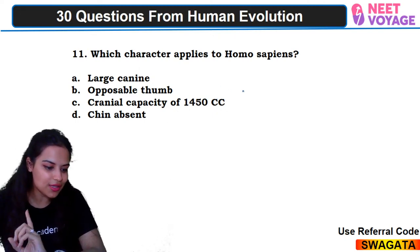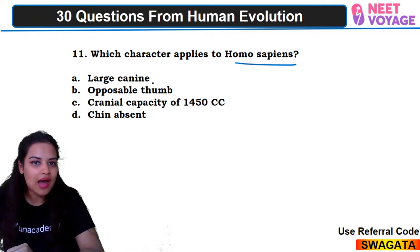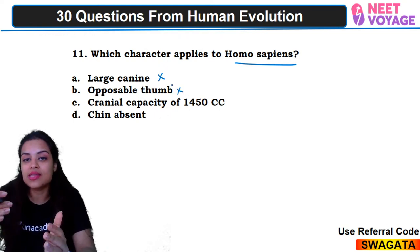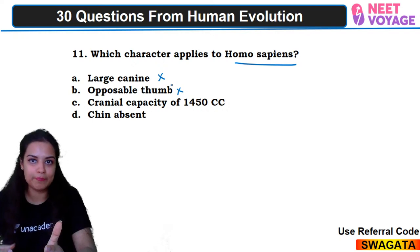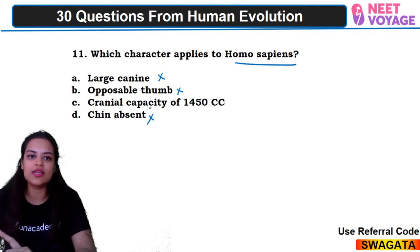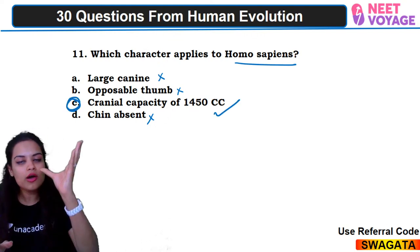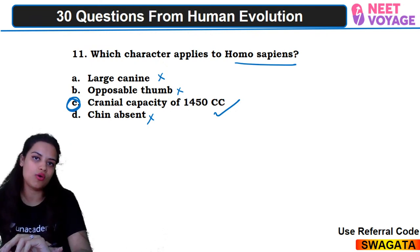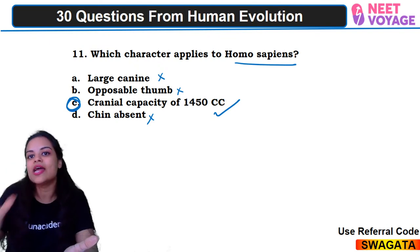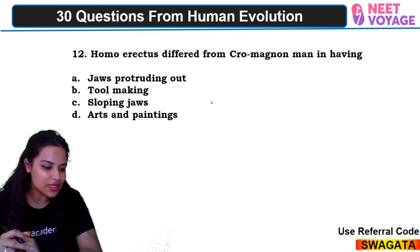Eleventh question: which characteristic applies to Homo sapiens? Large canine — no. Opposable thumb — yes, but that's also seen in australopithecus, homo habilis, and homo erectus. Chin absent — no, chin is present. Cranial capacity of 1450 cc — yes, that is correct. So C would be the right answer. Opposable thumb is not the only characteristic feature of homo sapiens. Ram Prasad answered correctly.